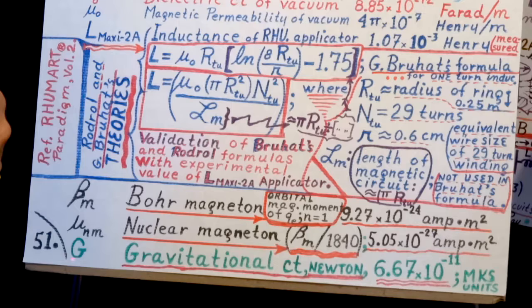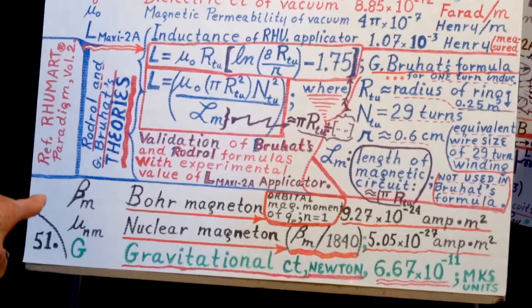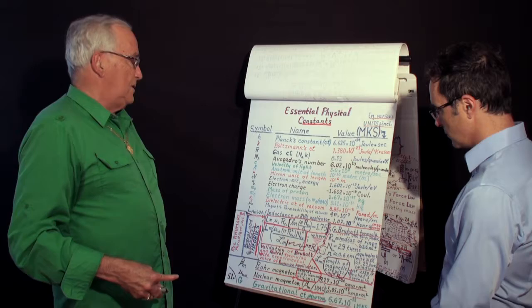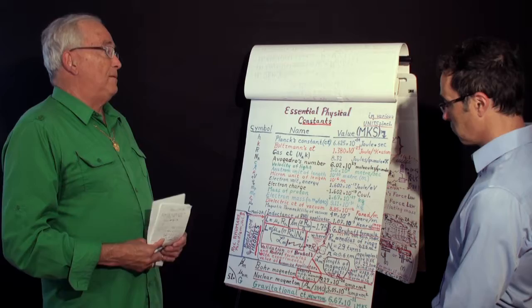G is the gravitational constant from Newton, and its value in the equation, its numerical value is 6.67 times 10 to the minus 11 in the MKS unit. This has been measured in laboratory by measuring the force between two-bit mass.